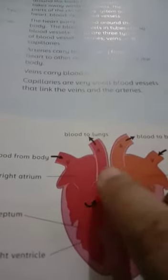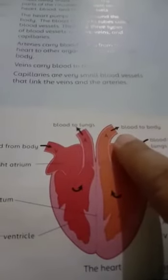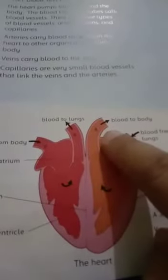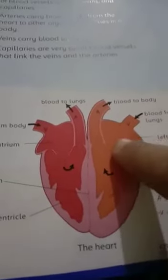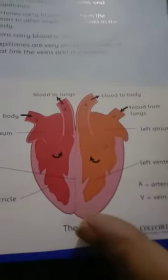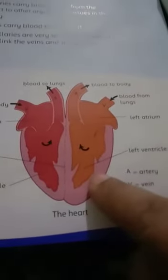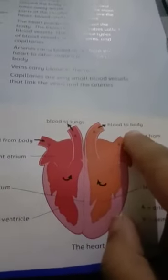All other arteries carry pure blood, but the pulmonary artery is the only artery taking impure blood to the lungs. Similarly, all veins carry impure blood — they are colored blue as you can see — but the pulmonary vein is the only vein that brings pure blood from the lungs into the left atrium. When both atria contract, this pure blood from the left ventricle enters a vessel and pure blood is supplied to each and every part of the body. This is how your heart works.